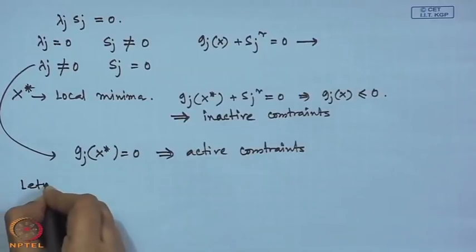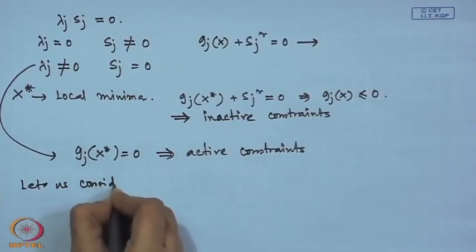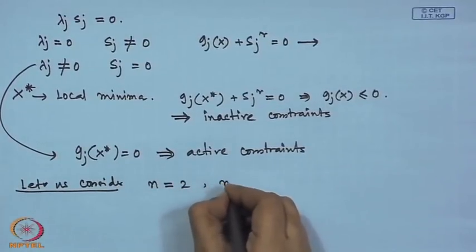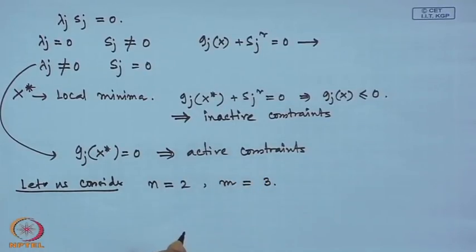We will develop this study further with geometrical interpretation. Consider a smaller problem with 2 decision variables and 3 inequality constraints. We will study how we arrive at the condition that λ_j > 0 for active constraints. Consider: minimize f(x) subject to g_1(x) ≤ 0, g_2(x) ≤ 0, g_3(x) ≤ 0, assuming g_1 and g_2 are the active constraints.